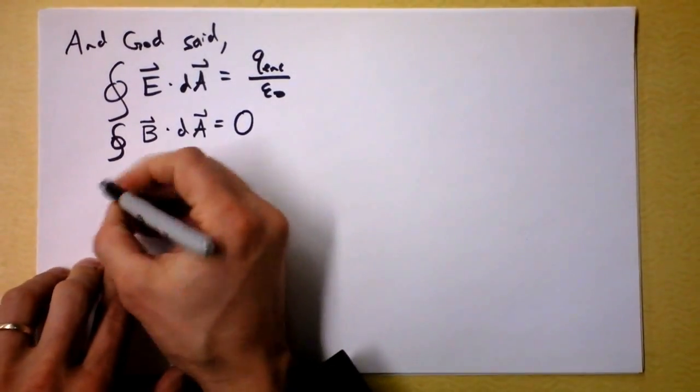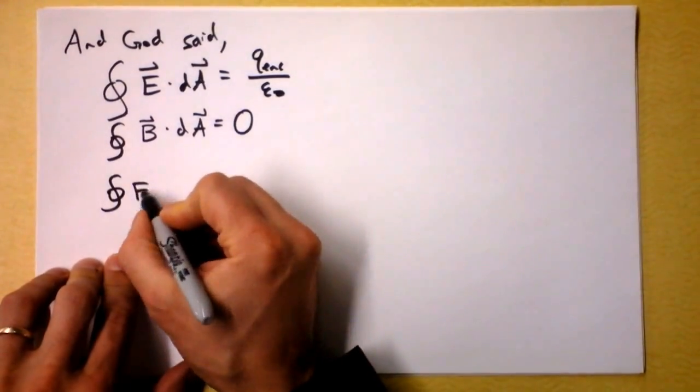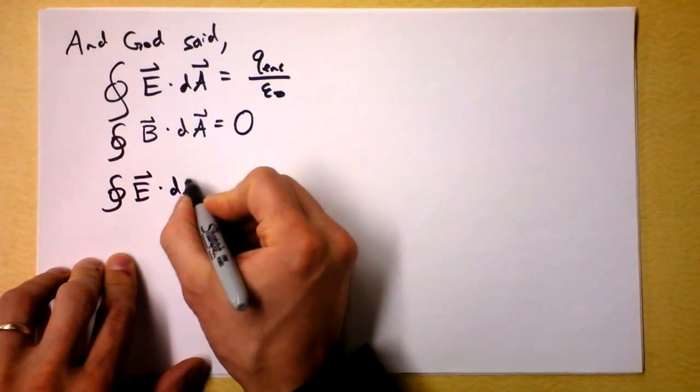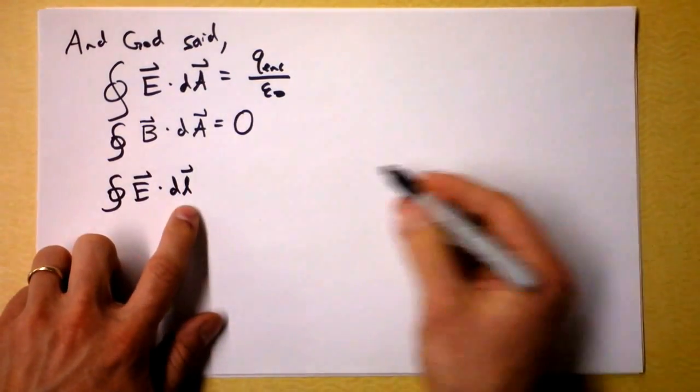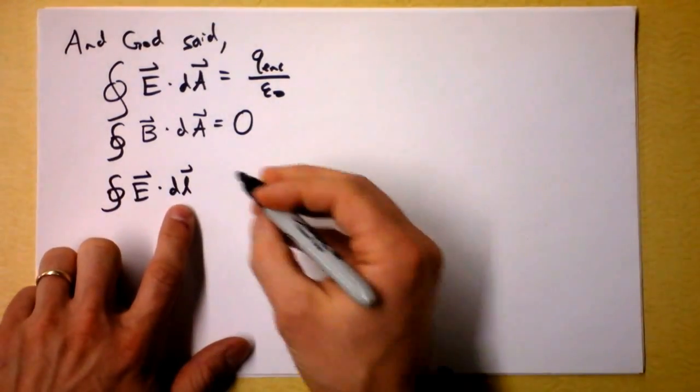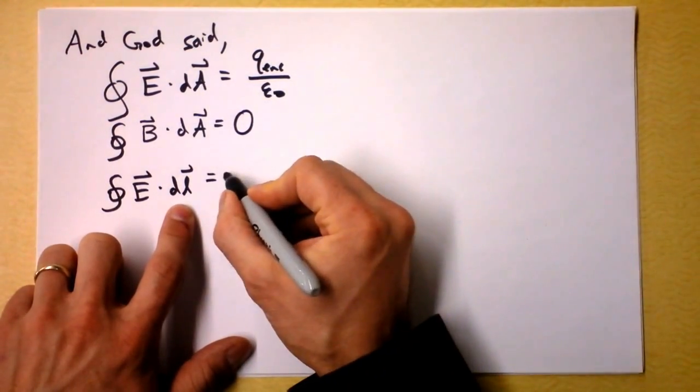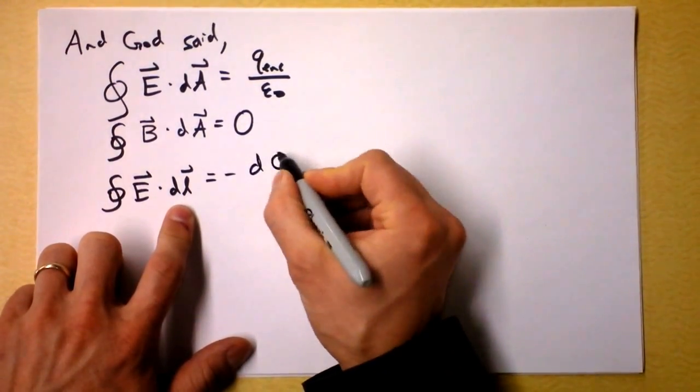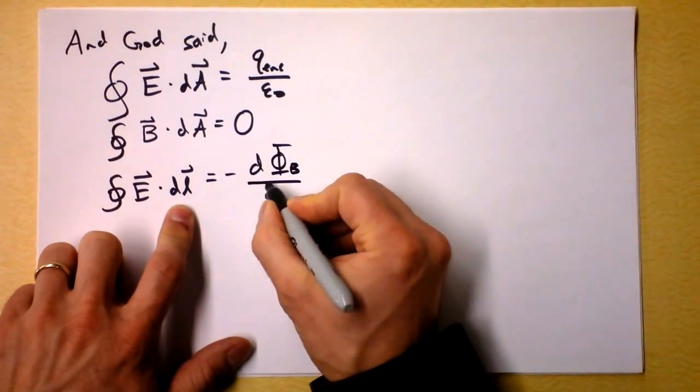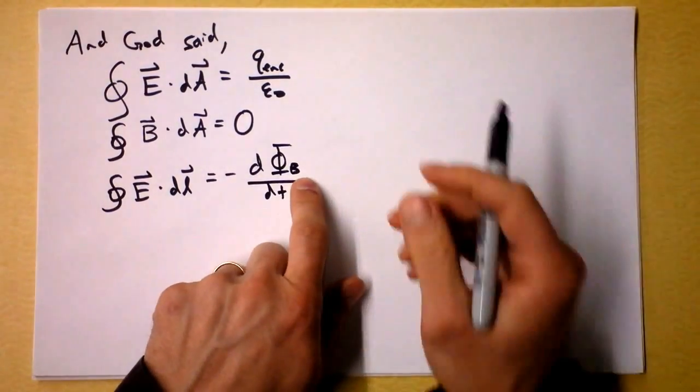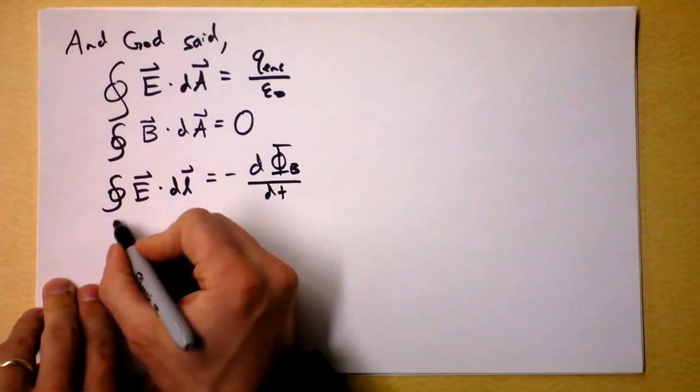Then there's this other integral where if you take the integral of the electric field along some line, as long as it's a closed line forming some closed loop - some people call it an Amperian loop - then this is going to be the change in flux. Well of course, it's the opposite of the change in the magnetic flux.